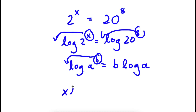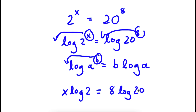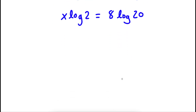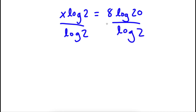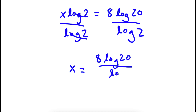So now I have x times log 2 is equal to 8 times log 20. Now what I'm going to do is divide both sides by log 2. So these two cancel out and I'm left with x is equal to 8 times log 20 over log 2.